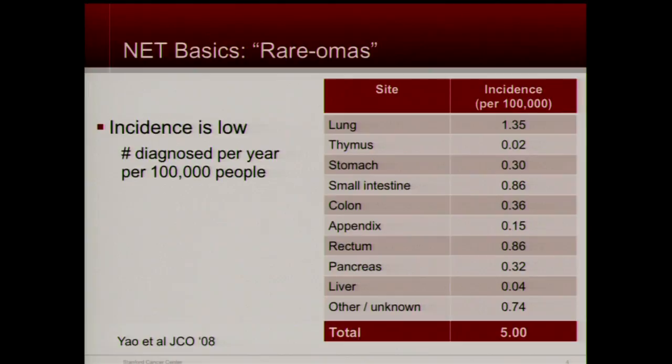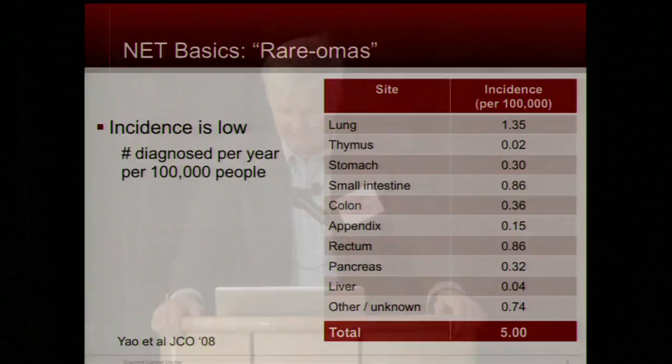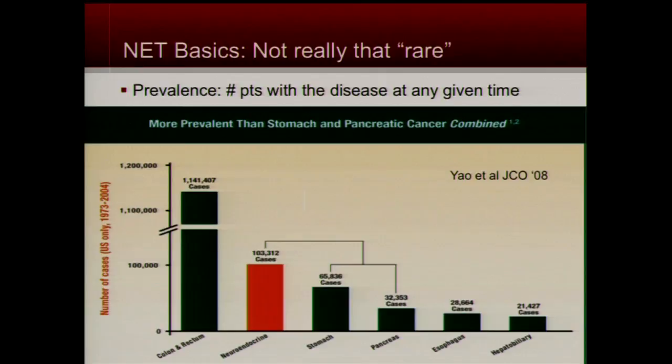In terms of the incidence — meaning the number of patients who are diagnosed each year — it's considered a rare tumor. Overall, the total of neuroendocrine tumors is about five per hundred thousand. So you're not quite one in a million, but five per hundred thousand is still a fairly rare tumor type. But that belies the prevalence. The number of people in the population who have that tumor — that's called the prevalence — and prevalence is actually fairly high.